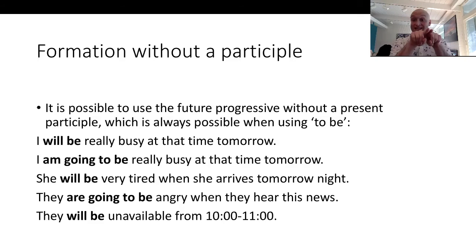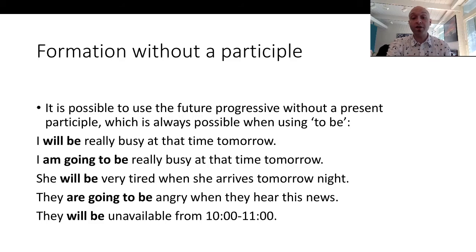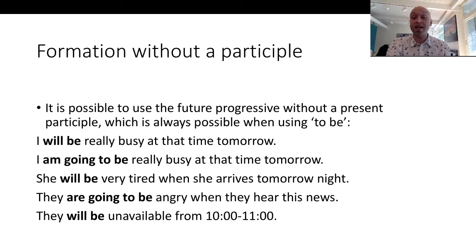Just two different ways of saying the same thing, which native speakers do all the time with the future progressive. Next example: 'she will be very tired when she arrives tomorrow night' — no participle. 'They are going to be angry when they hear the news' — no participle. 'They will be unavailable from 10 to 11.'